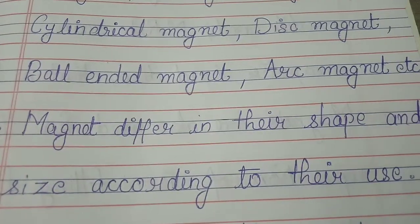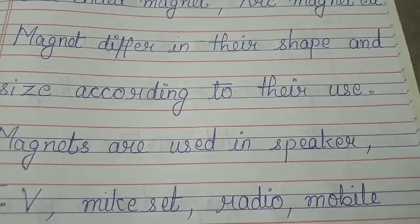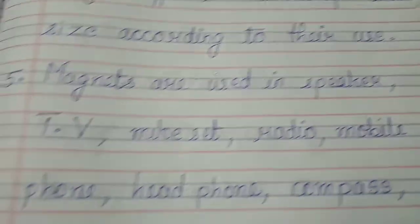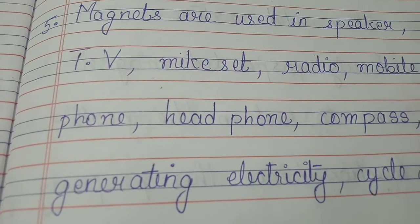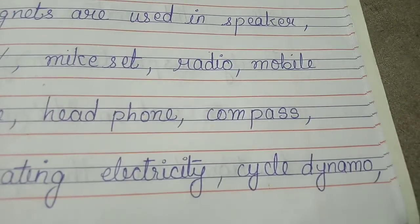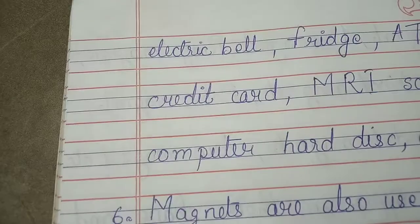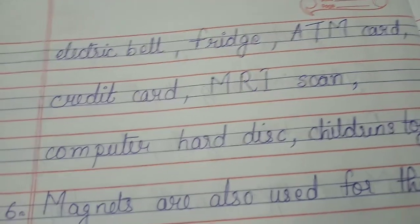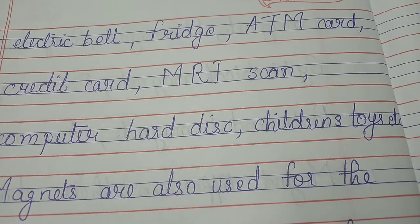Magnets differ in their shapes and size according to their use. Magnets are used in speakers, TV, mic set, radio, mobile phones, headphones, compass, generating electricity, cycle dynamo, electrical bell, fridge, ATM card, credit card, MRI scan, computer hard disk, children's toys, etc.